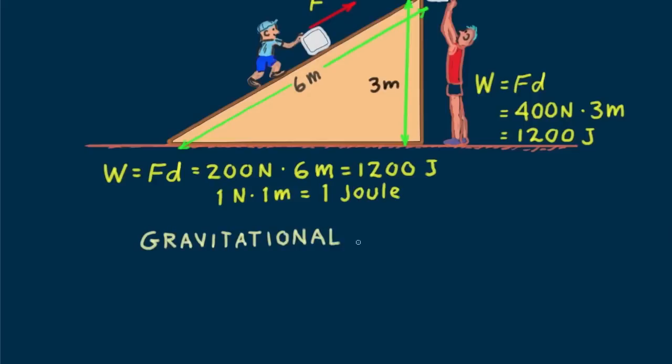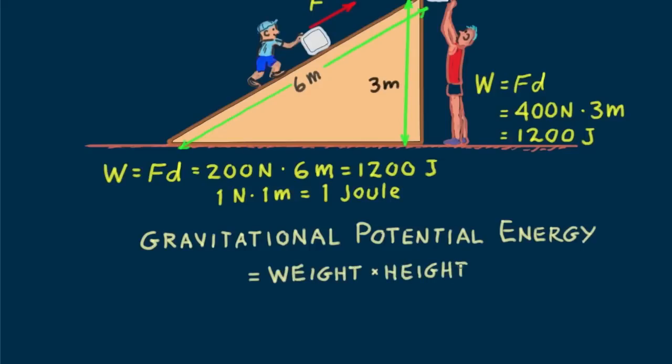We call this acquired energy gravitational potential energy. We define it as weight times height. If we express weight as MG and height as distance H, we say potential energy equals MGH. The potential energy MGH is really an energy difference. It is measured relative to a reference level. For example, if the potential energy of the block atop the ramp is 1200 Joules, then its potential energy is 0 Joules at the bottom of the ramp.